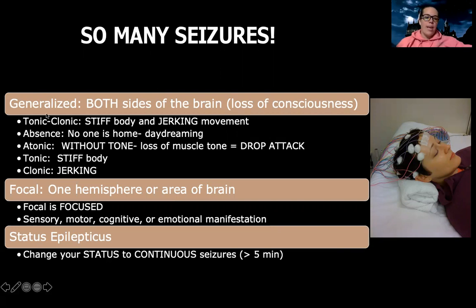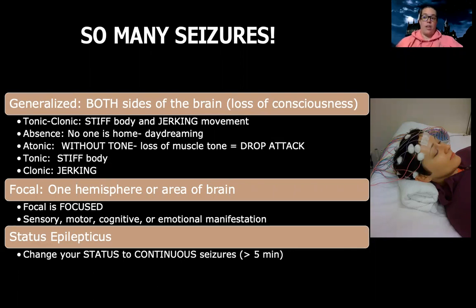Some of the most common types of generalized seizures — there's what's called tonic-clonic. And this is what, when you think of a seizure, this is what you're thinking of. There's a stiff body and jerking motion. They're out, but their body is having that jerking motion. That's what most people know when they're thinking of a seizure.